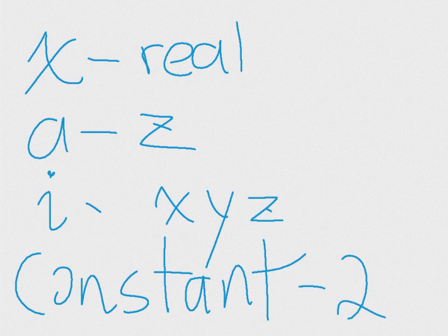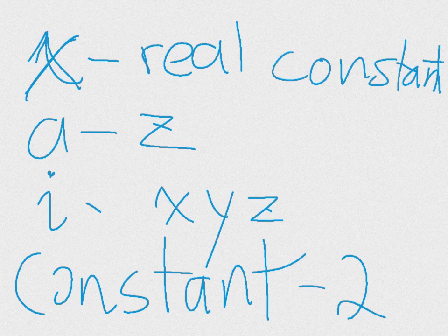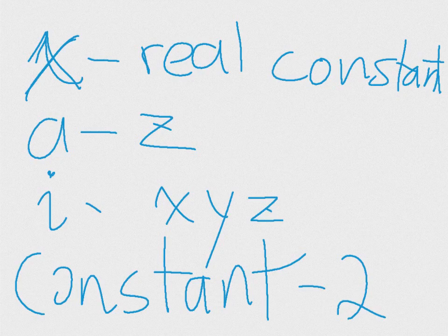So a variable can represent a constant. Variable, no. Variable cannot be representing constant. Yes, it can. That's today's class. All right, goodbye. Variable is...